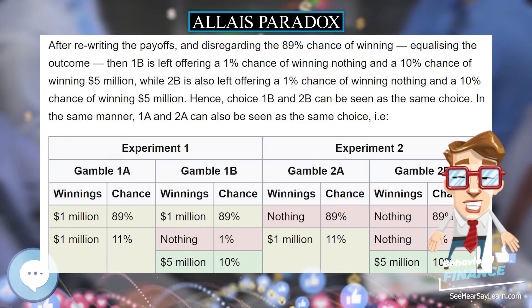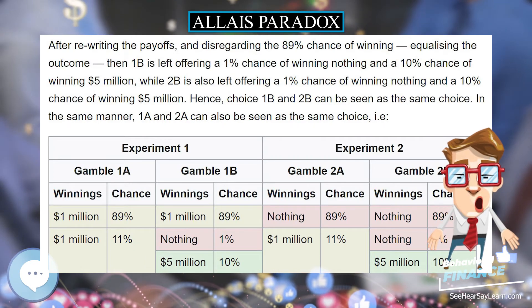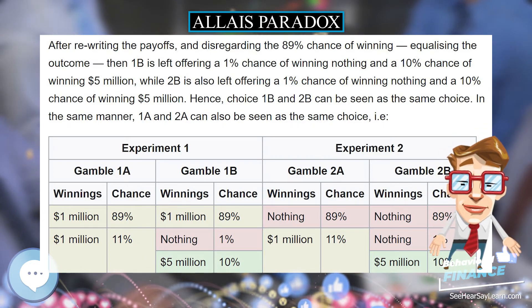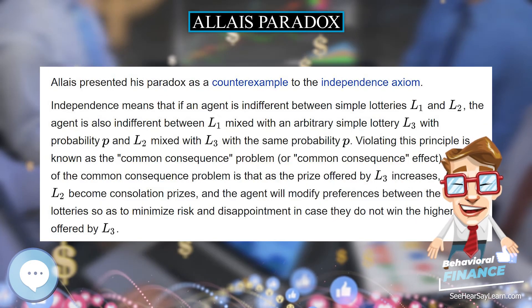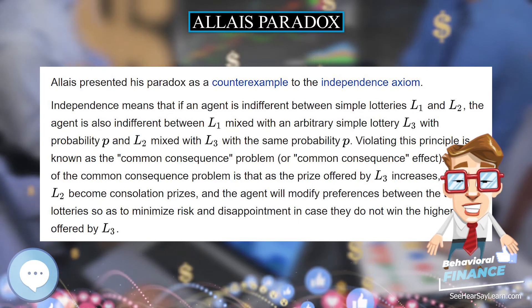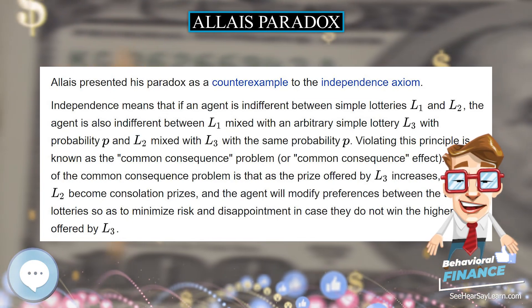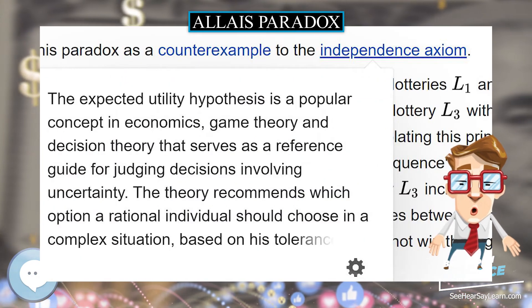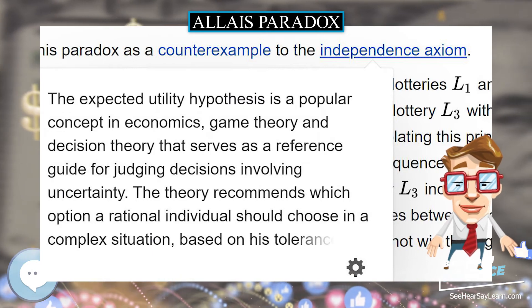We don't act irrationally when choosing 1A and 2B; rather, expected utility theory is not robust enough to capture such bounded rationality choices that in this case arise because of complementarities.